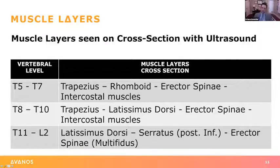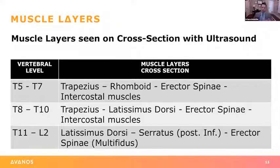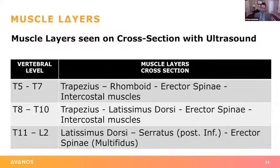As you come down to the low thoracic and high lumbar region, the trapezius disappears. You have the lat dorsi, the posterior inferior serratus, and the erector spinae multifidus. Obviously there are no ribs once you get into the lumbar spine, so there is no intercostal muscle underneath. The erector spinae multifidus fans out in the lumbar region to attach to the iliac crests, so we have to adjust the ultrasound probe orientation slightly to keep the erector spinae plane in view when placing lumbar catheters.